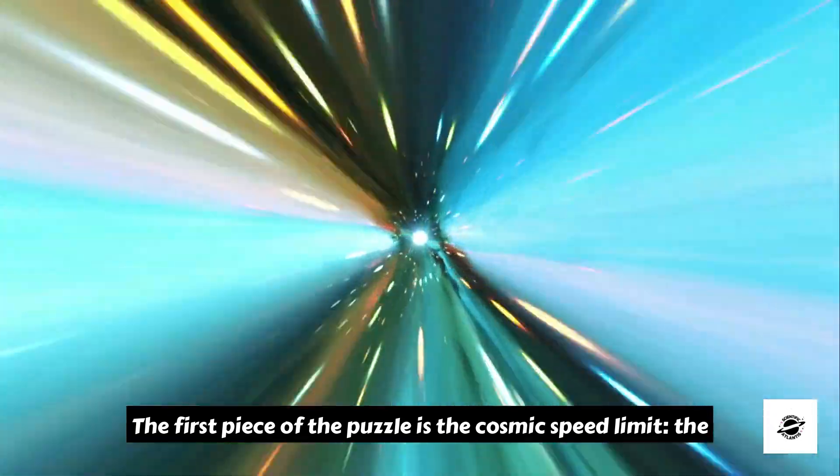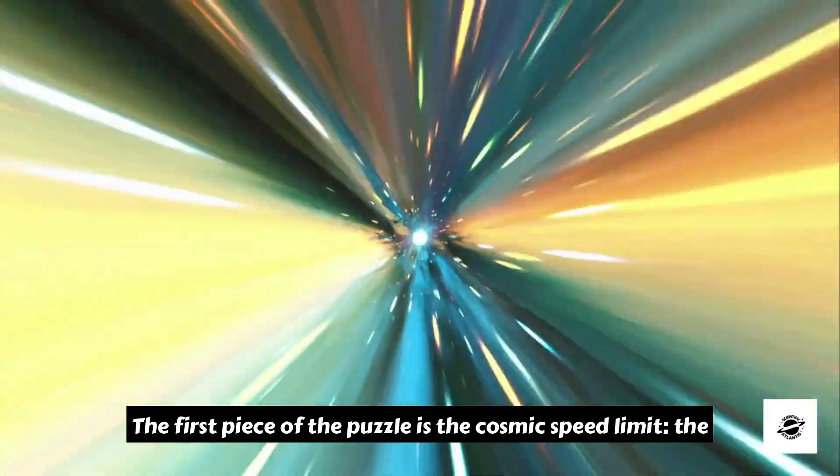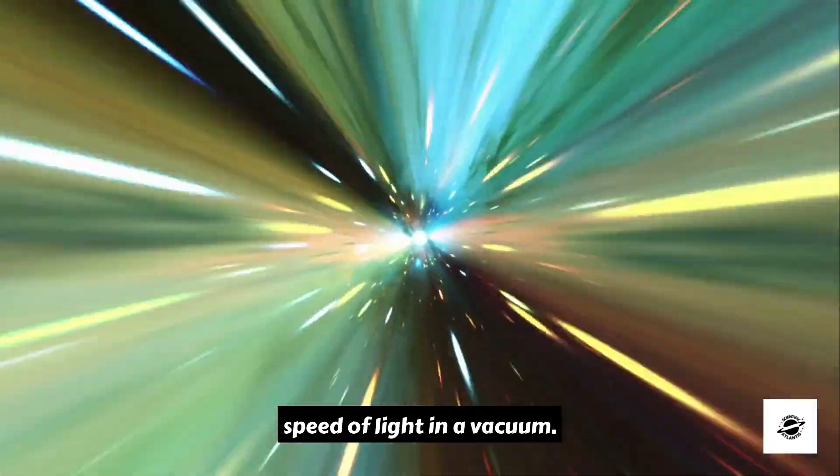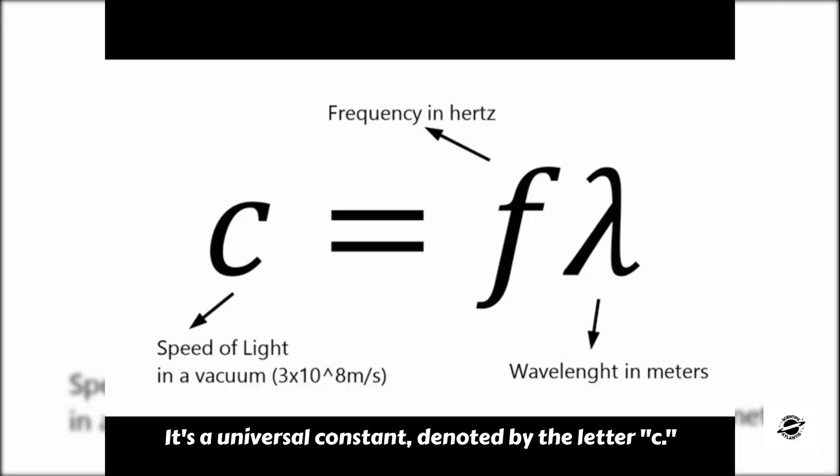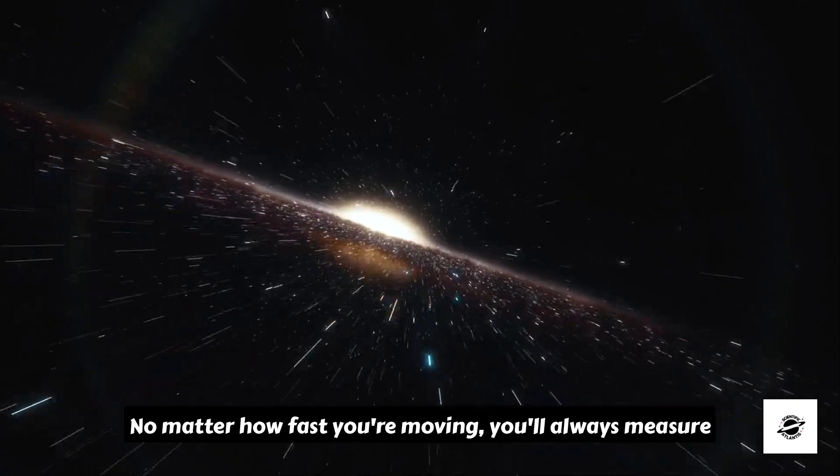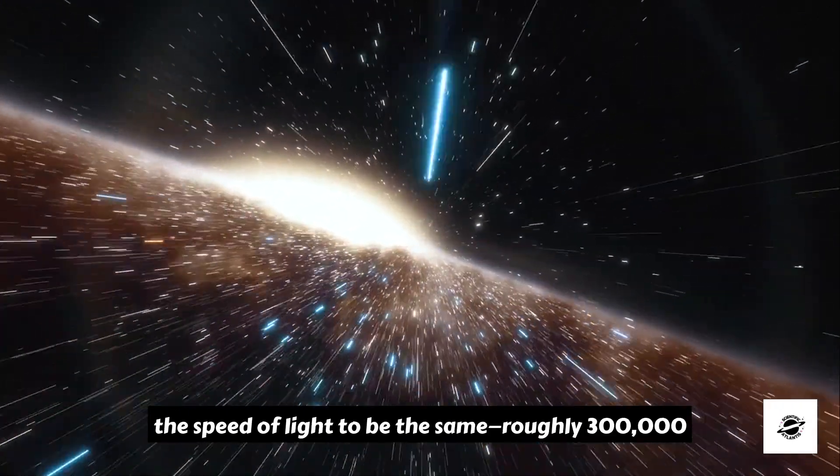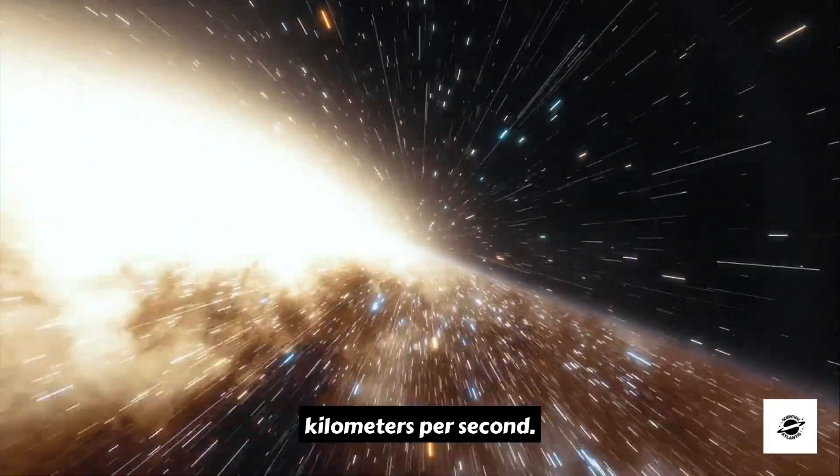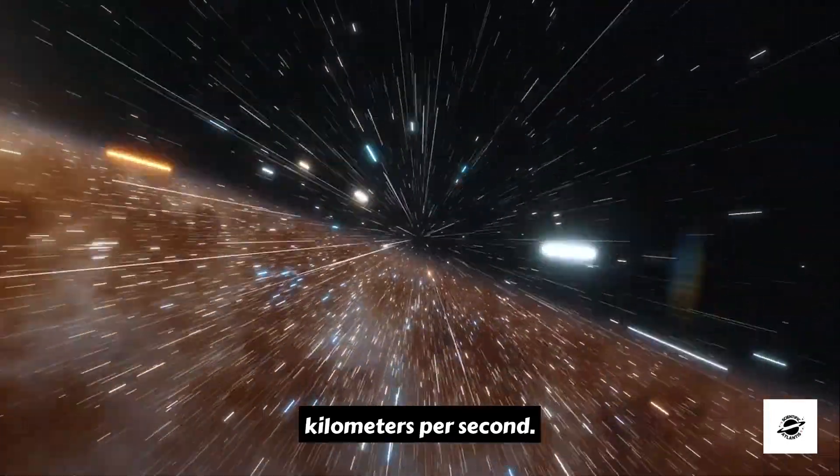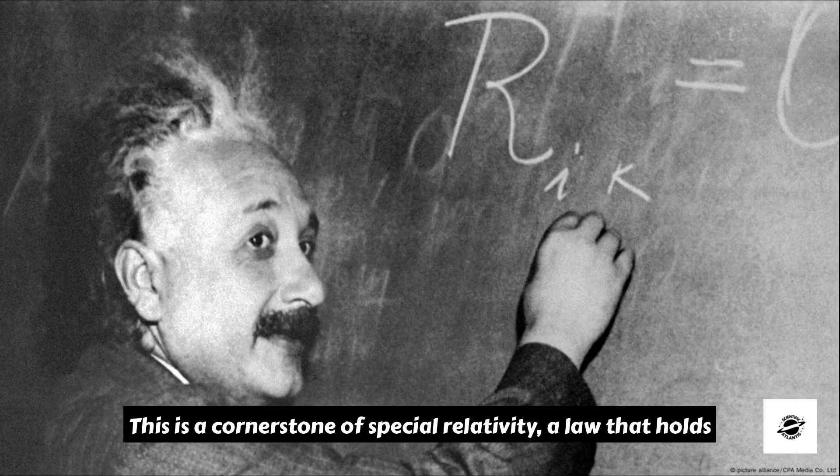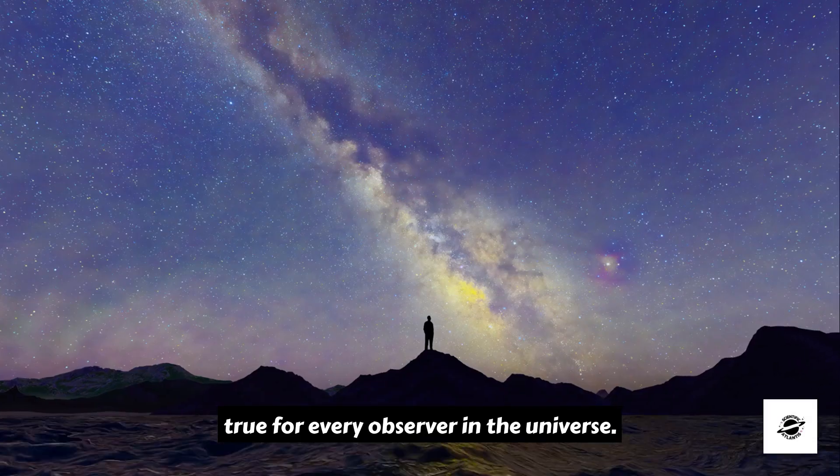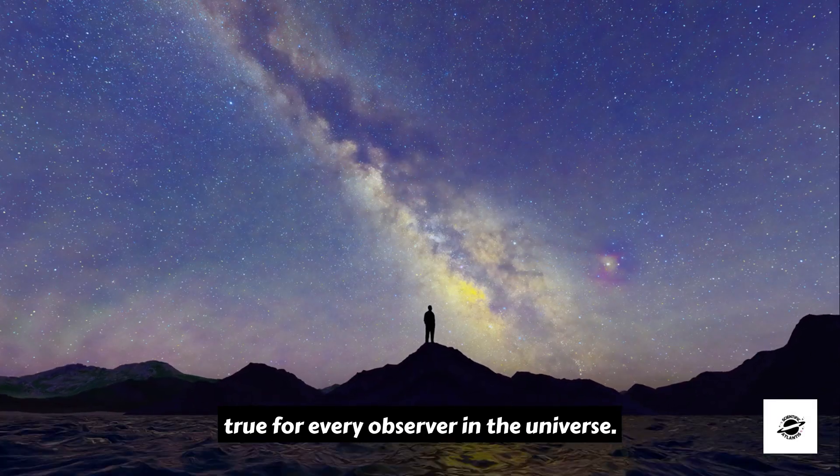The first piece of the puzzle is the cosmic speed limit, the speed of light in a vacuum. It's a universal constant, denoted by the letter C. No matter how fast you're moving, you'll always measure the speed of light to be the same, roughly 300,000 kilometers per second. This is a cornerstone of special relativity, a law that holds true for every observer in the universe.